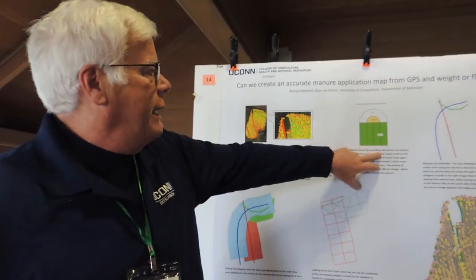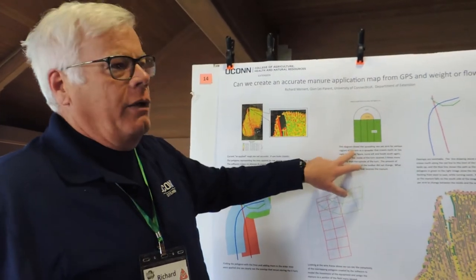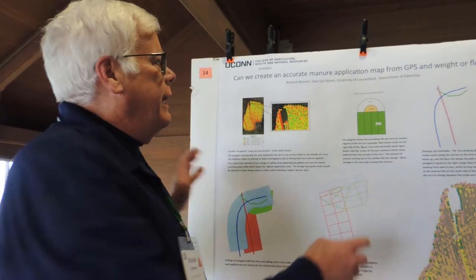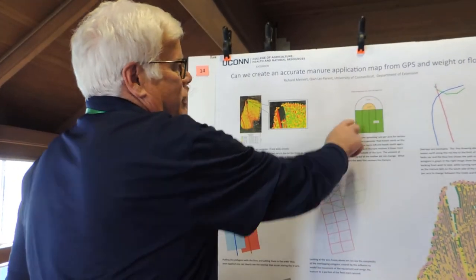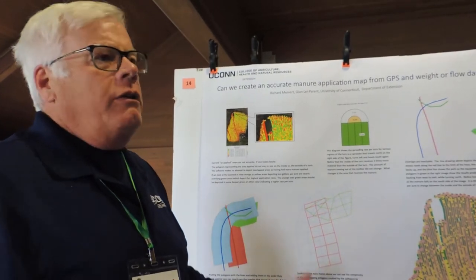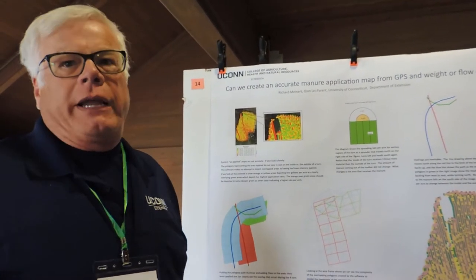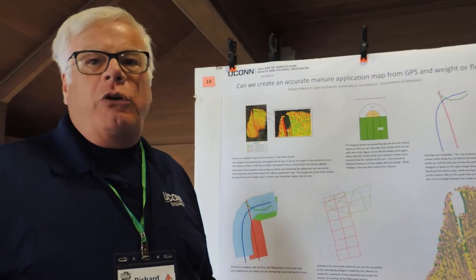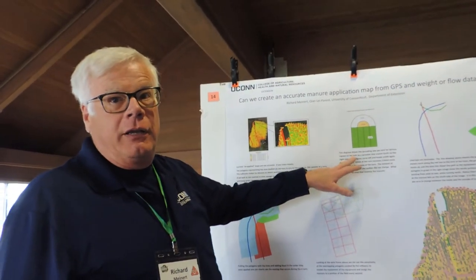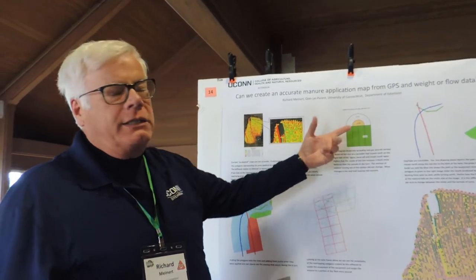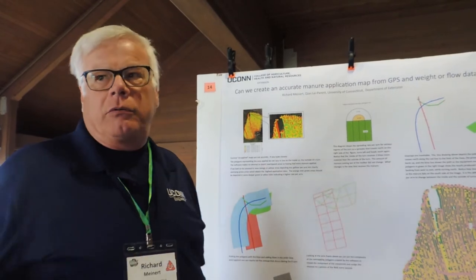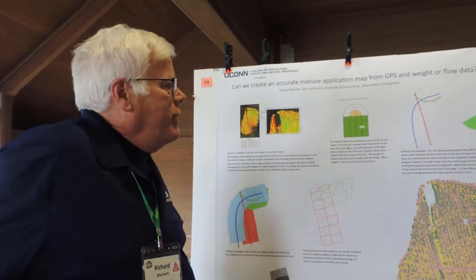The second thing we noticed is we're not getting a variable rate on the inside versus the outside of the turns, just due to the area difference of the curve. The area of a circle expands at the square of the radius, so the outside area is much bigger than the inside area. But the flow rates are the exact same because of the equipment — the pumping rate, or pounds per second, are the same.